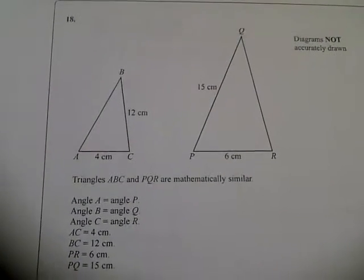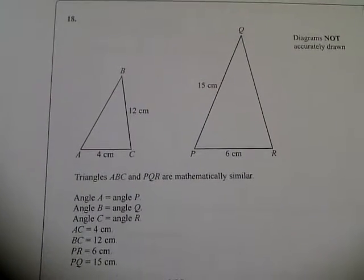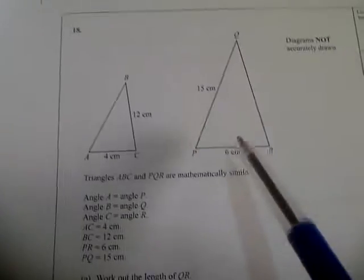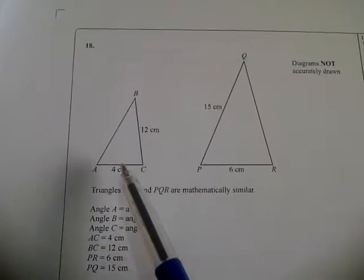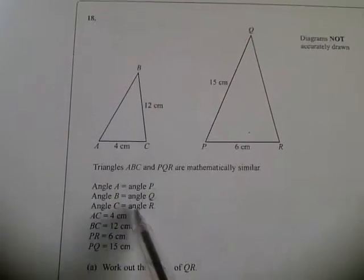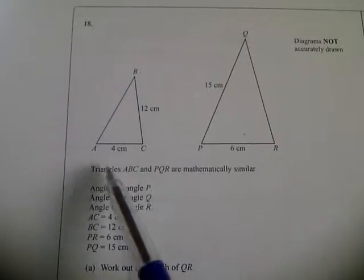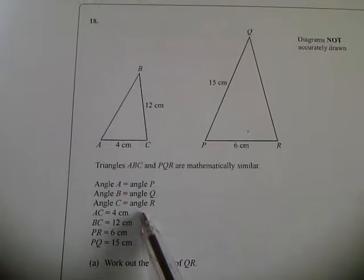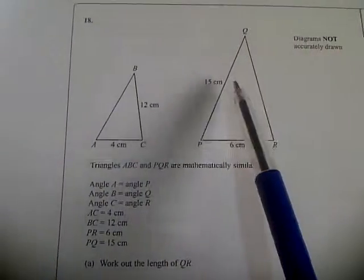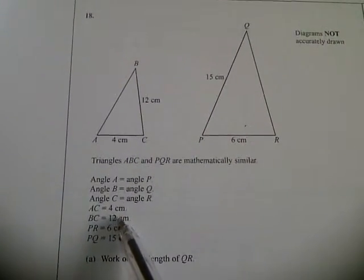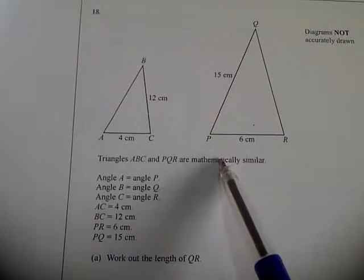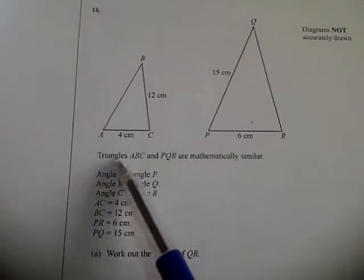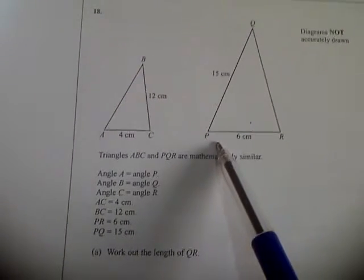Question number 18. Looking at two triangles, triangle ABC and PQR are mathematically similar. Angle A equals angle P, angle B equals angle Q, and angle C equals angle R. AC is 4 cm, BC is 12 cm.